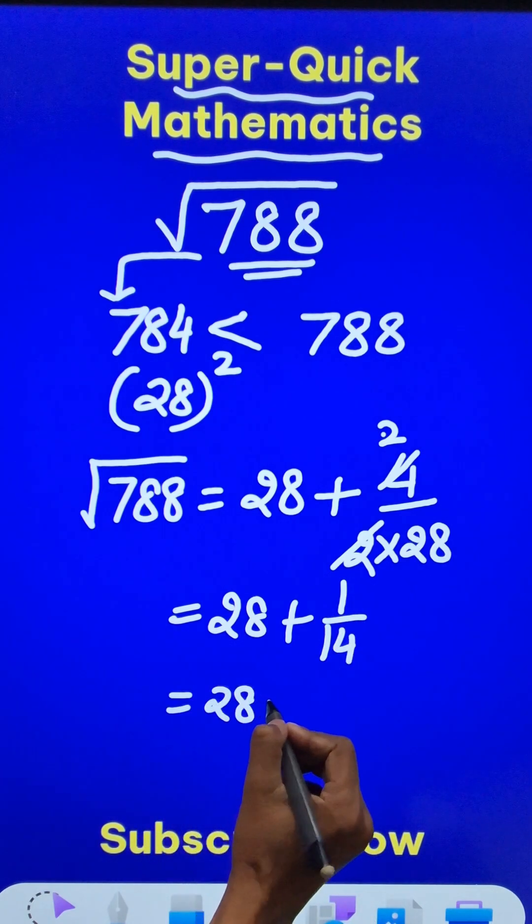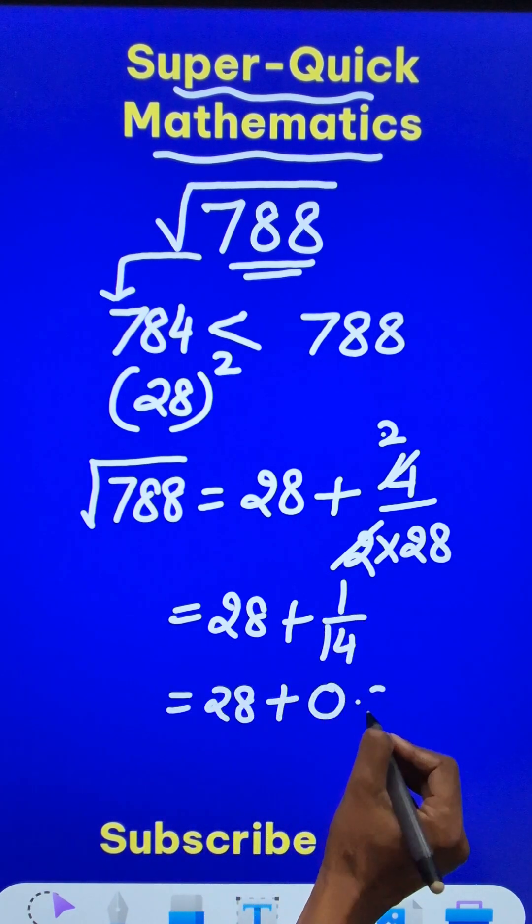And now 28 plus you just have to do 1 over 14 which is 0.07 and now what's the magic?